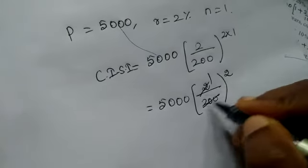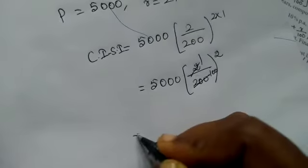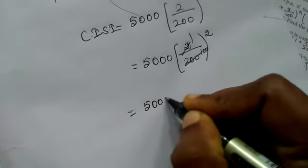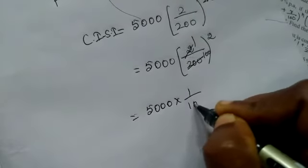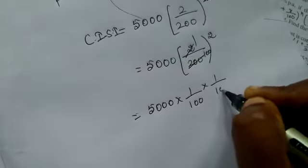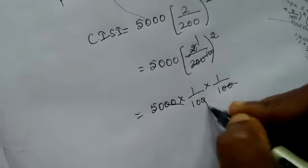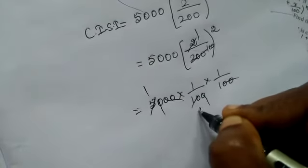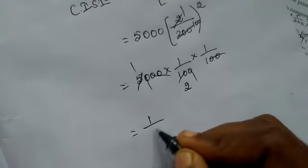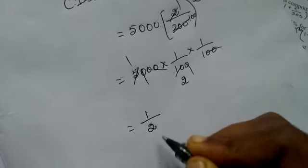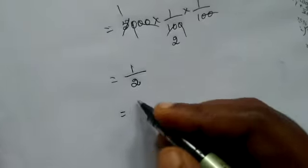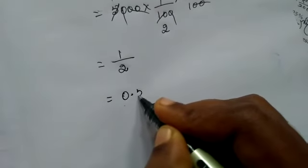This equals 5000 times 1 by 100 times 1 by 2, which gives us 5000 by 200, equals 1 by 8, equals 0.50 rupees.